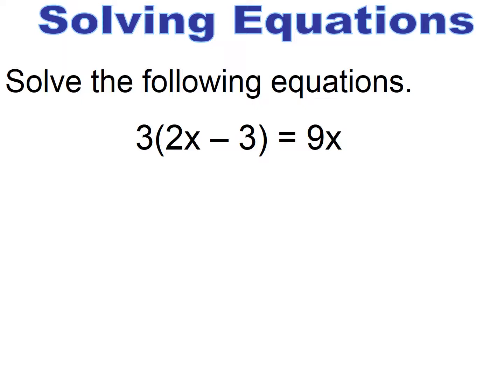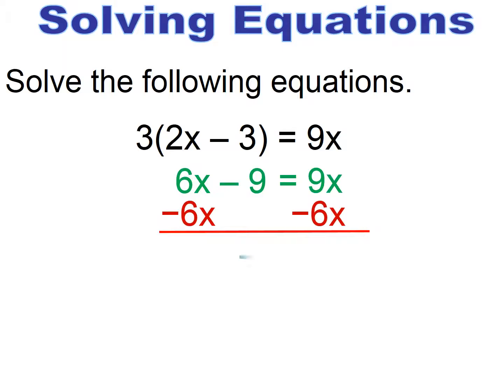Pause and try. Double check your distributive property — you get 6x minus 9 equals 9x. I want to move to the 9x side since x is already by itself there. I subtract 6x, leaving negative 9 equals 3x. I divide through by 3 and x equals negative 3.